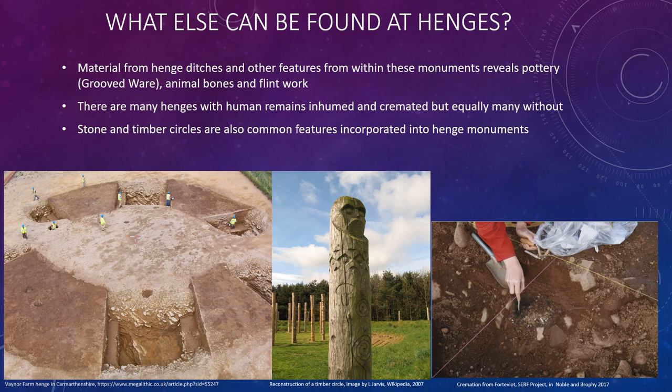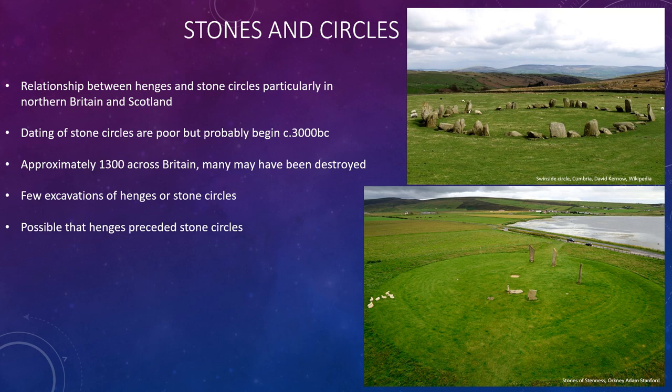Stone and timber circles are also a common feature incorporated into henge monuments and these tend to be later features. Numerous henge monuments within northern Britain, Scotland and Wiltshire have stone circles. Stone circles can also be standalone monuments — they don't have to be associated with a henge. There are about 1,300 stone circles across Britain, however we might not know about all of them. Many have probably been destroyed in the past by agricultural practices or when a house is being built. Prehistoric monuments were often broken up to build houses and ripped up so that farmers could plough the land, so there may have been many more stone circles than are currently known.